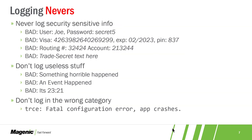Some big-time logging nevers: don't log things that are going to make your InfoSec group go spare — credit card numbers, financial credentials, trade secrets, passwords, cryptographic keys. You probably have an information classification policy in your shop, and you should know it backwards and forwards so you know what not to log.